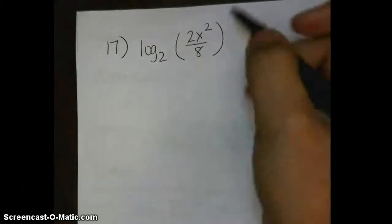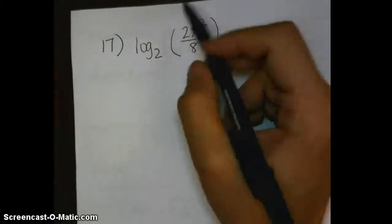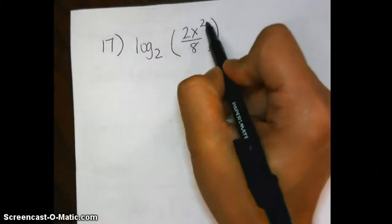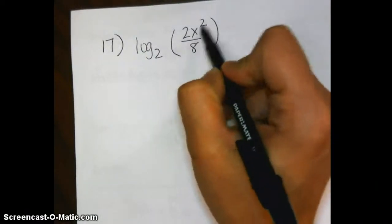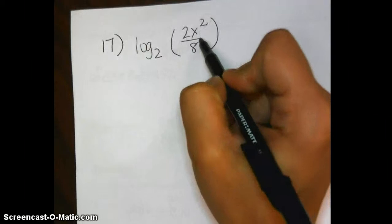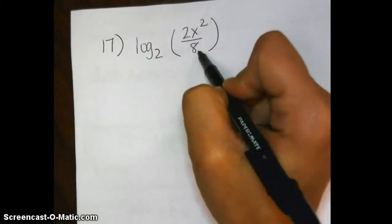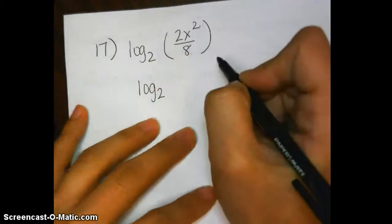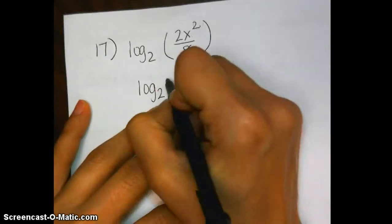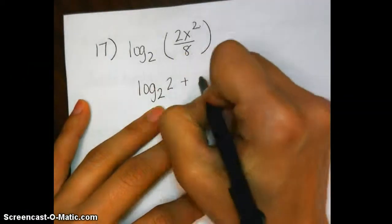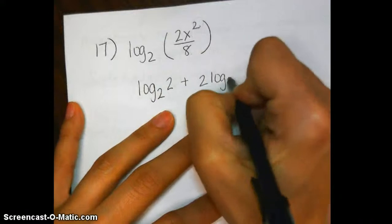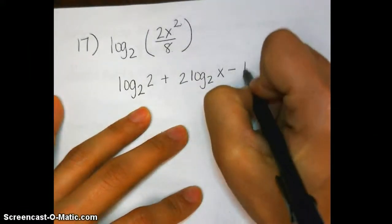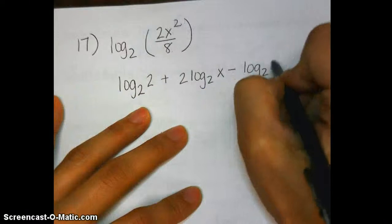Okay. So for this, we're seeing that we have a product on top with a power. So this is addition and there is a scalar multiple. And then division is really subtraction. That's not the bad part. It's just long, right? So we're going to expand it now. Log base 2 of 2 plus 2 times log base 2 of x minus log base 2 of 8.